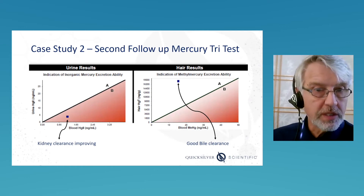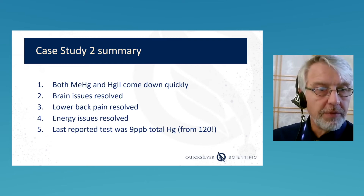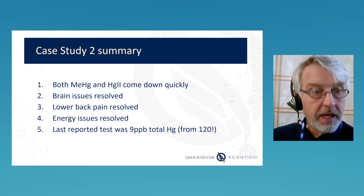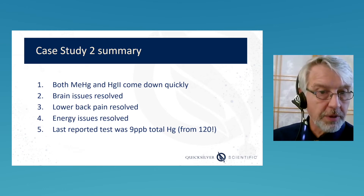Case two summary: both forms came down quickly. Brain issues resolved, lower back pain resolved — lower back pain is a clue that kidney clearance is impaired. Energy resolved. Last reported test was nine parts per billion, down from 120, but still a ways to go.